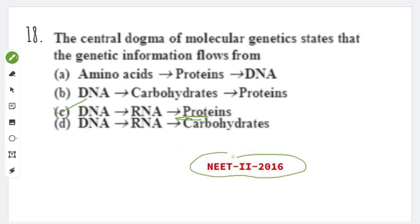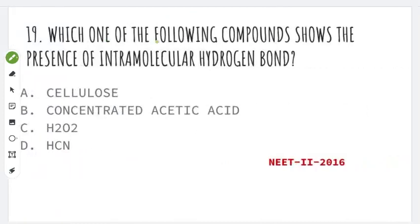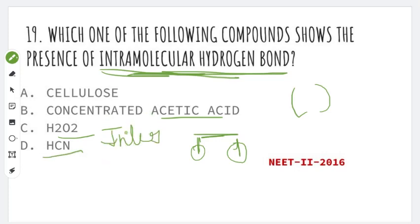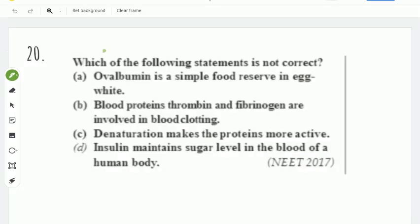Next question: which one of the following compounds shows the presence of intramolecular hydrogen bonding? Intramolecular hydrogen bonding occurs within the same molecule. Two different molecules show intermolecular hydrogen bonding, but within one molecule it is intramolecular. The right answer is intramolecular hydrogen bonding in cellulose. This is a 2016 Phase 2 question.